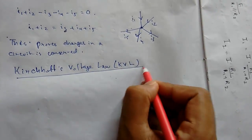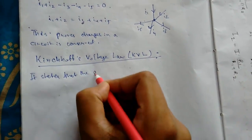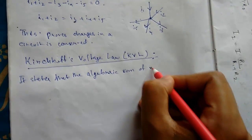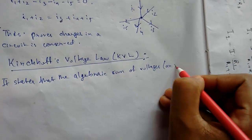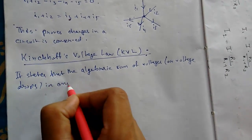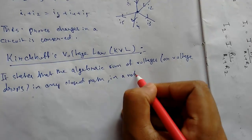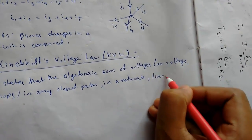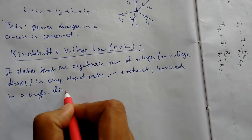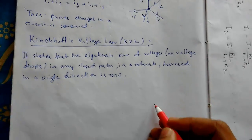Now we'll be learning about Kirchhoff's voltage law, KVL. It states that the algebraic sum of voltages or voltage drops in any closed path in a network, traversed in a single direction, is zero.